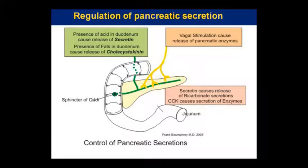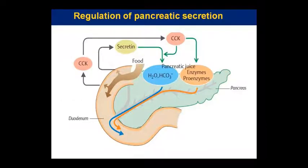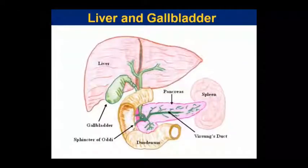Pancreatic secretion is caused by secretin and cholecystokinin (CCK). Acid presence in the duodenum causes secretin release, and lipid presence causes CCK release. Together, secretin and CCK cause pancreatic juice release — including pro-enzymes, water, and bicarbonate.